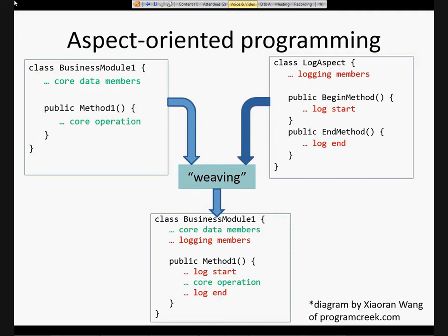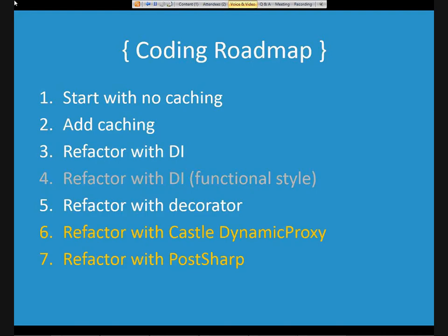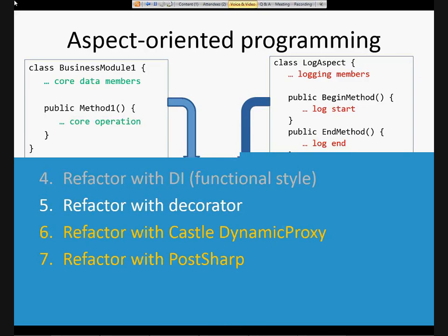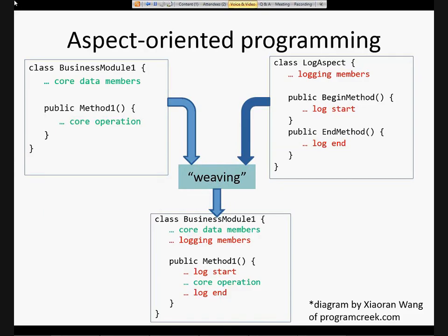That's the basics. Before we get into coding, any questions so far? One question: is AOP done after compile time, or during? It depends on the tool. I said after compile time to be a catch-all. Some tools like PostSharp are immediately after compile time — they're a post-compiler. But some tools do the weaving at runtime. In either case it's after compile time, just a matter of how long after. I'll show you an example of both tools today — a post-compiler and a runtime weaving tool.